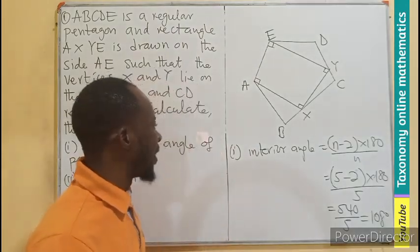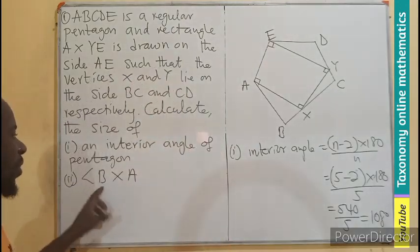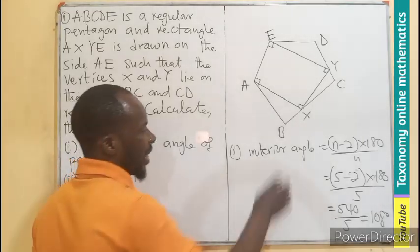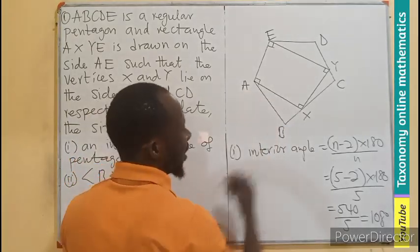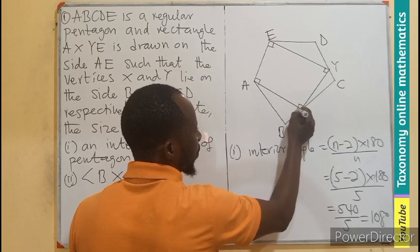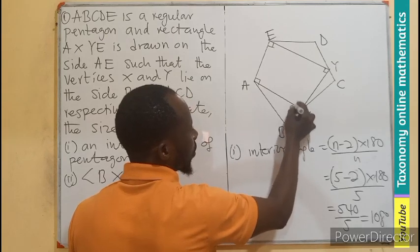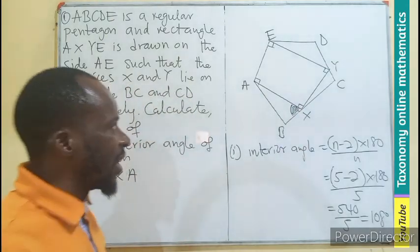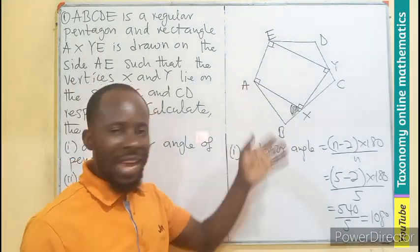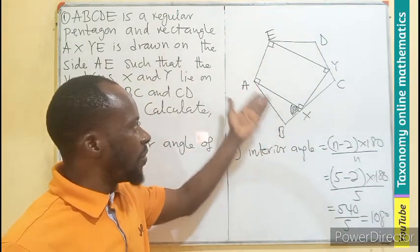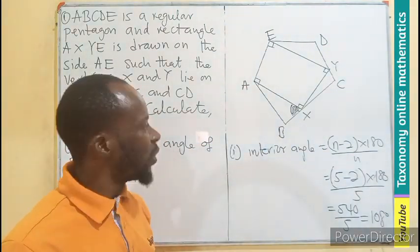The next question to find is angle BXA. Angle B, X, A. This very angle. And you can see that BXA as a triangle have interior angles, right? Good.